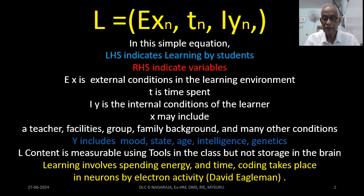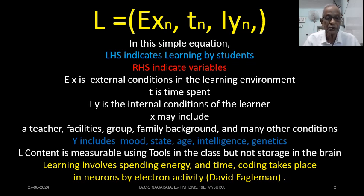External factors indicate conditions in the learning environment, which includes the teacher, facilities, the group of children, family background, and other conditions — even the way in which the child comes to the classroom. All these things are external factors. For example, there may be a class with very comfortable chairs, or a class where there are no chairs and children are sitting on the ground. That is the external condition.